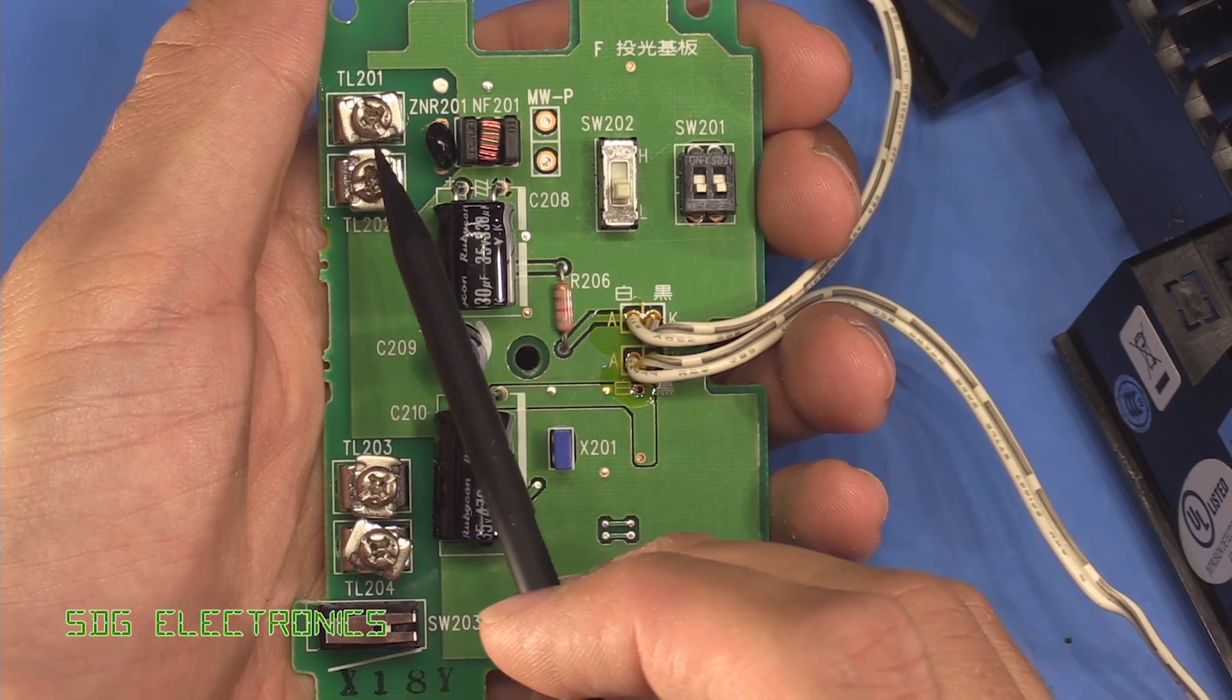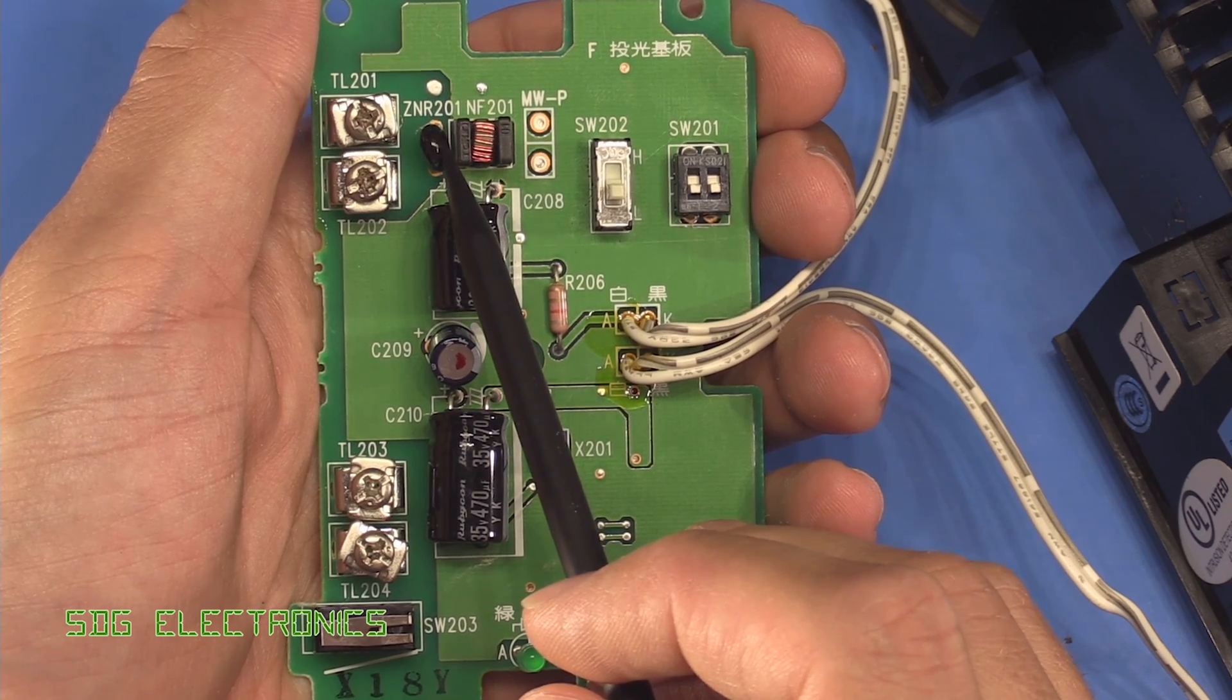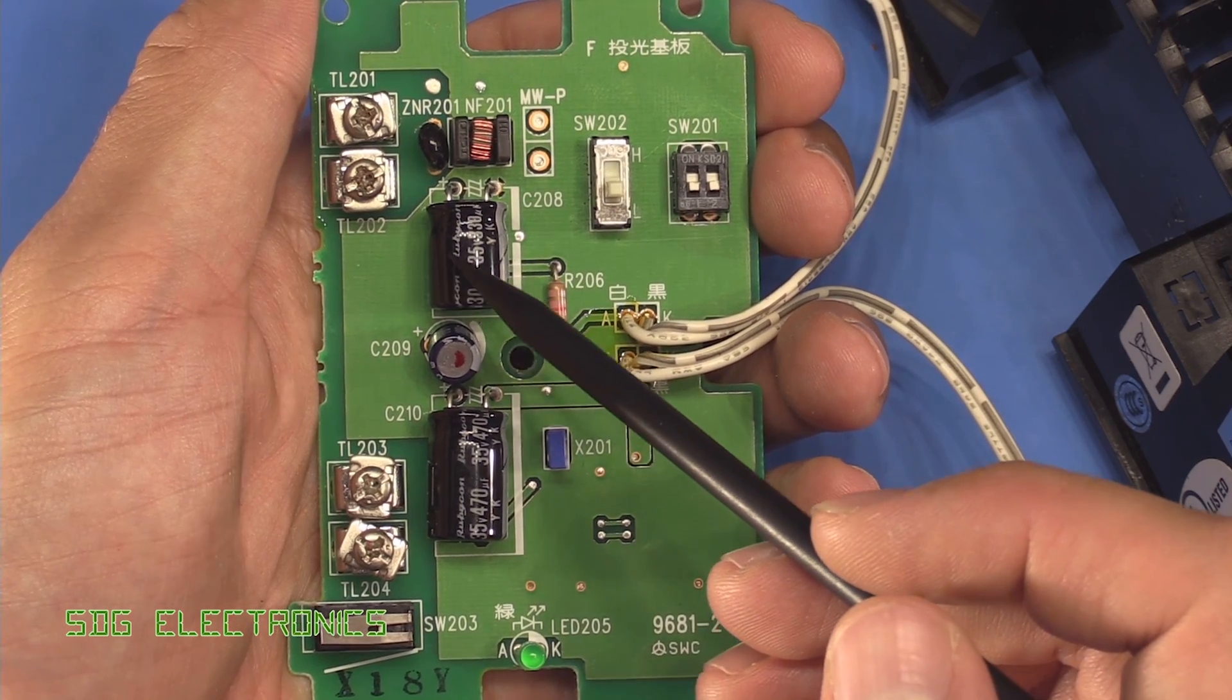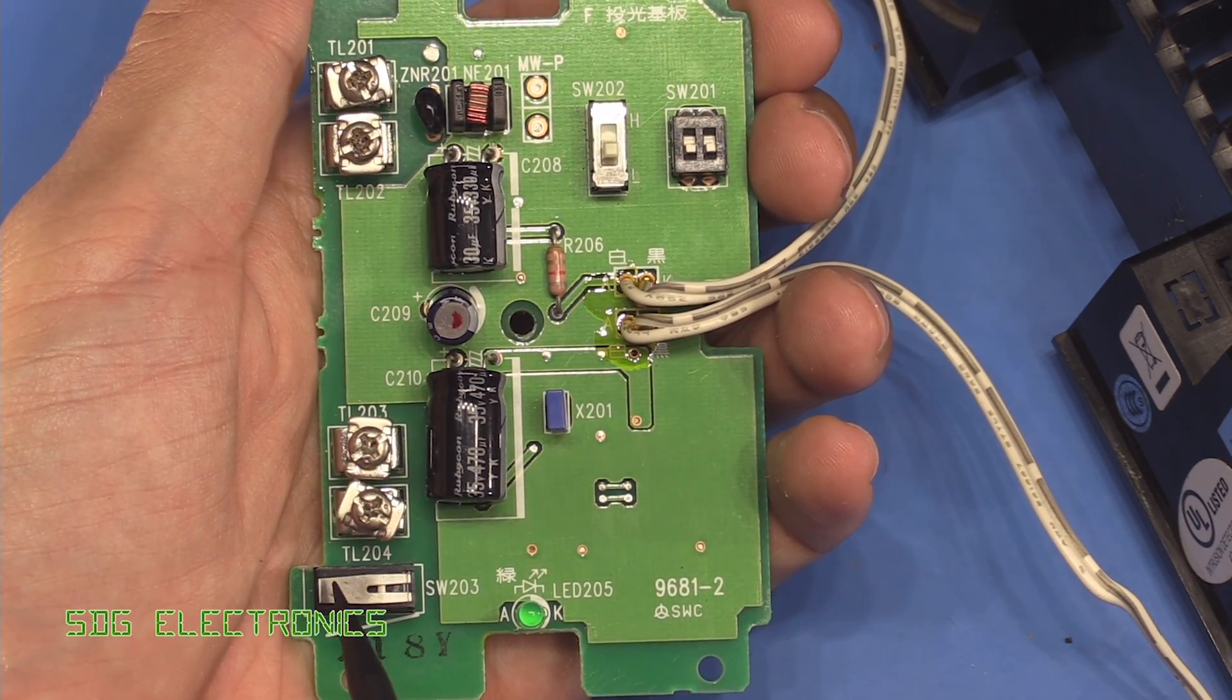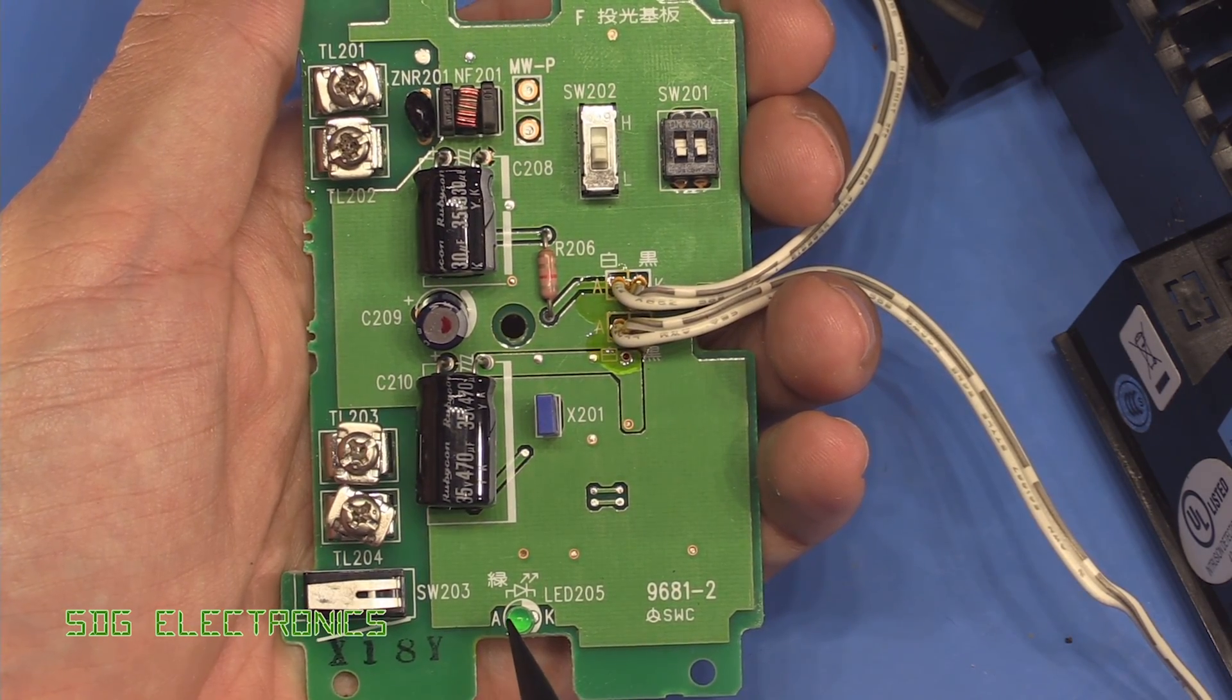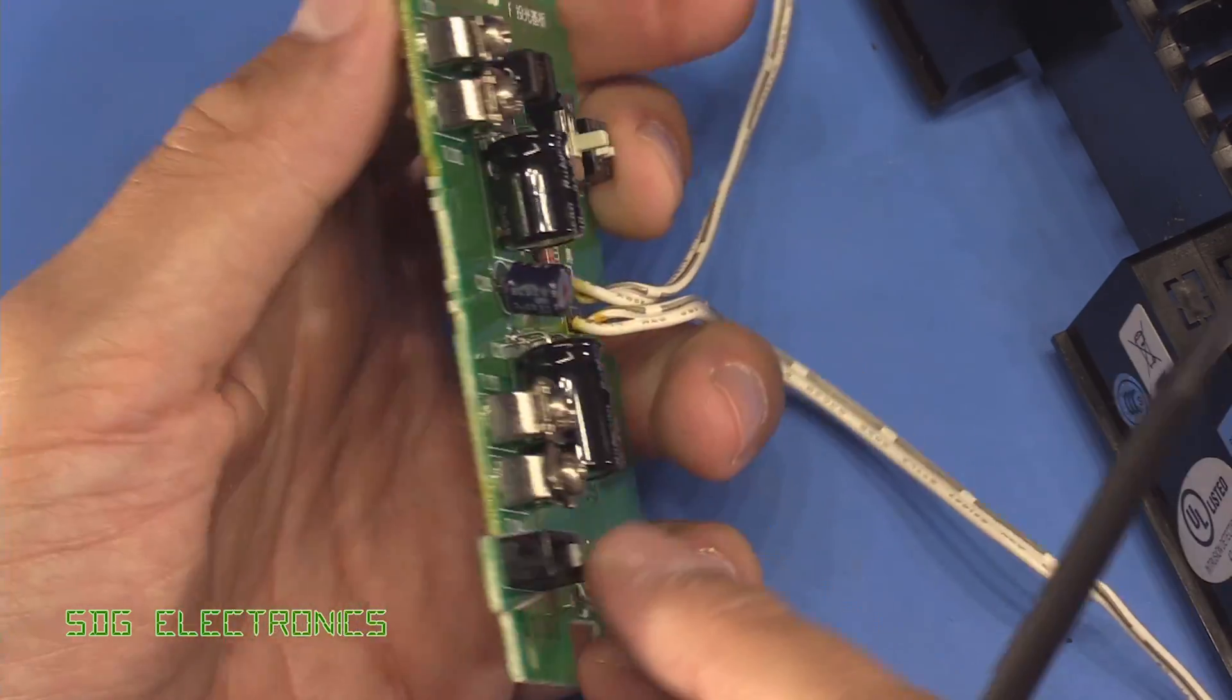Our transmitter PCB is pretty straightforward. We've got our DC input here, some kind of transient suppression device, a common mode choke to stop the AM signal being fed back down the DC wires, then we've got some bulk capacitors, our switches, a tamper switch which is triggered if the cover's removed, and then we've got a green LED just to say everything's okay. I would guess that X201 is some kind of oscillator device.